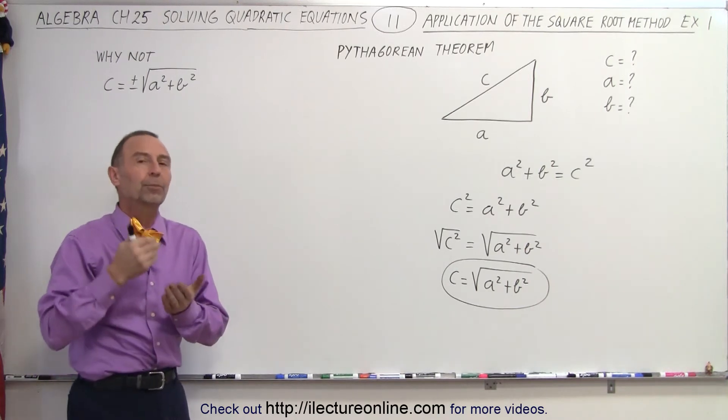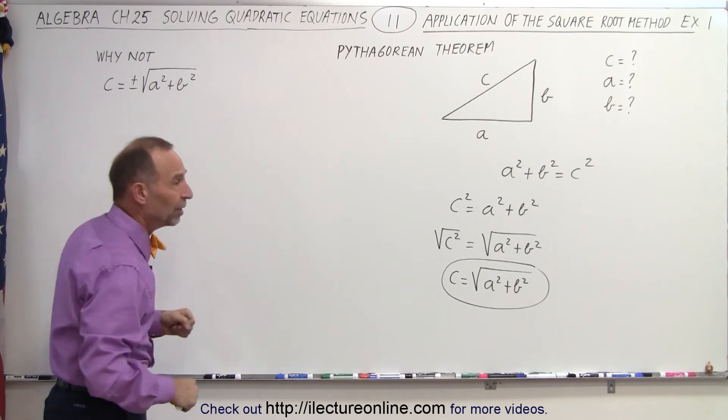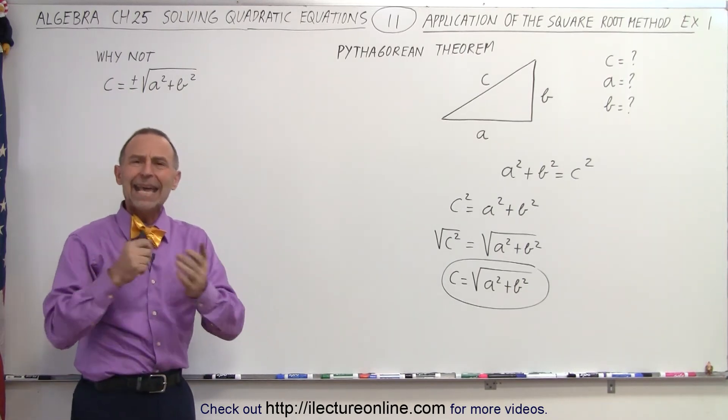But notice that if this was a minus the square root of a squared plus b squared, then c would be a negative number.